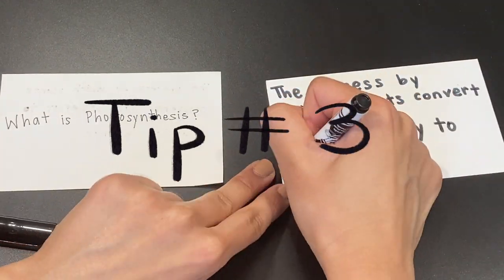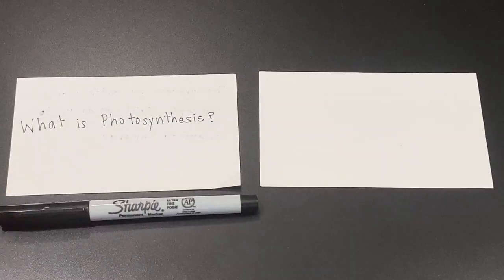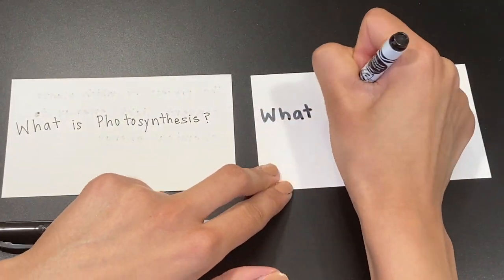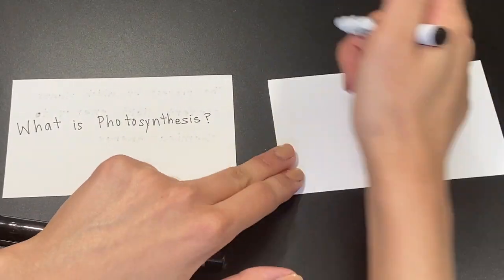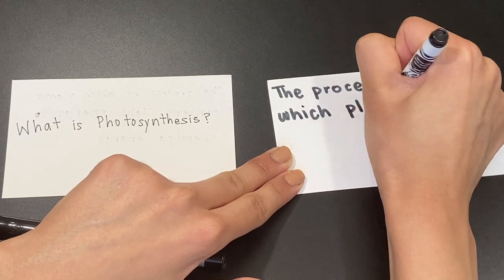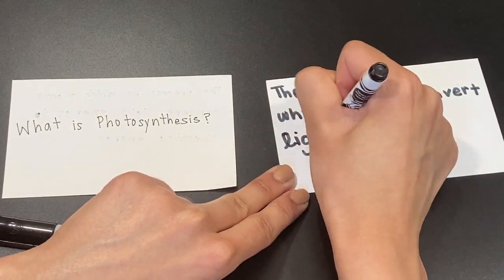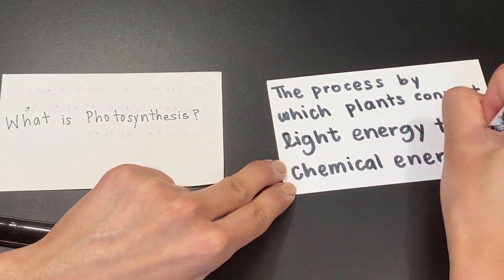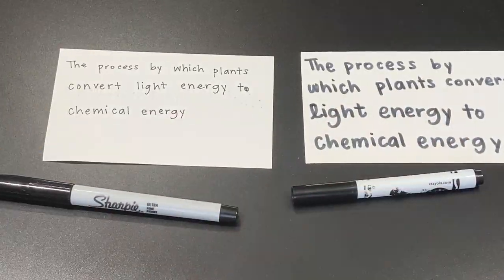Tip number three: the faster you can read your flashcards, the better. So use a thicker pen or even a marker such as a Crayola Super Tip to create a higher contrast between the words you're writing and the blank card. This will not only make it easier for you to read, but also make it easier for you to memorize the information you're trying to learn.